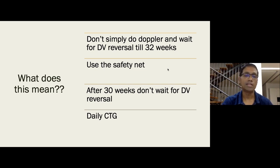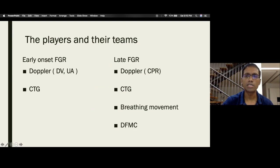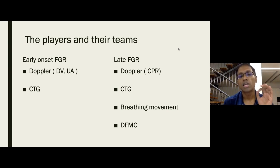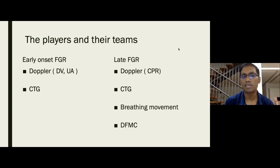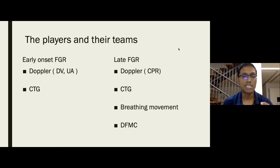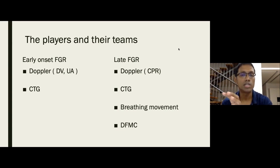There are two management teams: in early onset FGR, the players are Doppler — specifically the ductus venosus and umbilical artery — to decide delivery timing, with CTG as the safety net. This team focuses on cardiovascular adaptation, not the brain stem. In the late onset FGR team, the players are CPR Doppler, CTG, breathing movement, and daily fetal movement count — solely concentrating on the brain stem, not the heart.